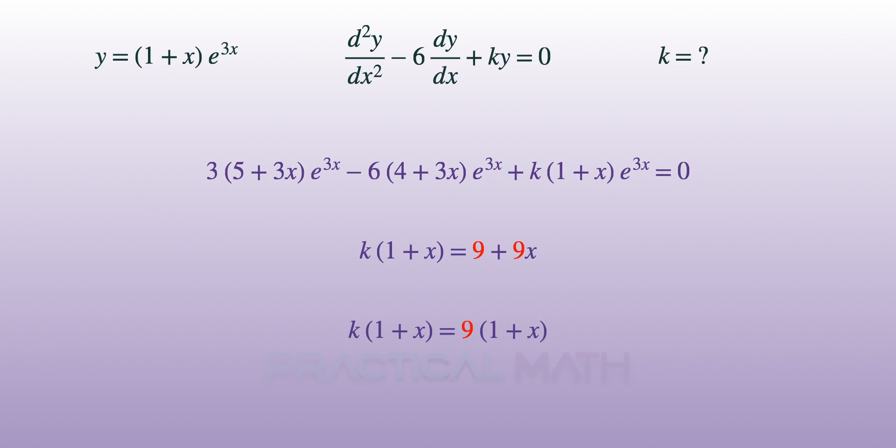After that, we factorize by extracting the common term of 9 on the right, so that we are able to divide 1 plus x on both sides of the equation. And here it is, the value of the constant k is 9.